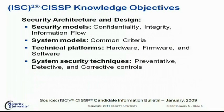Some of the main objectives in Security Architecture and Design include security models, which cover confidentiality, integrity, and information flow — but notably not availability in this area of discipline. Security models also include the common criteria, which define requirements for functionality as well as assurance. Technical platforms entail the hardware, the firmware — which is software embedded in computer chips — and the software itself. We also have to address system security techniques, which include preventive, detective, and corrective controls.